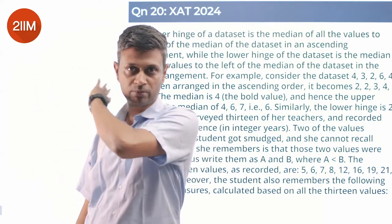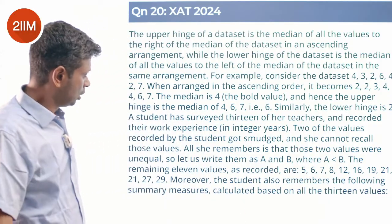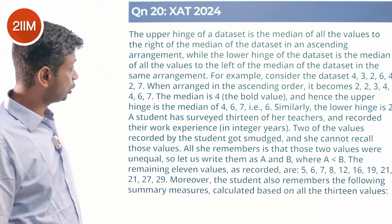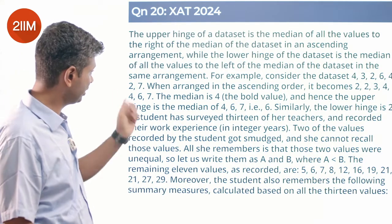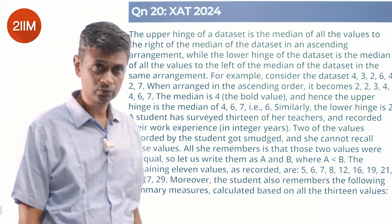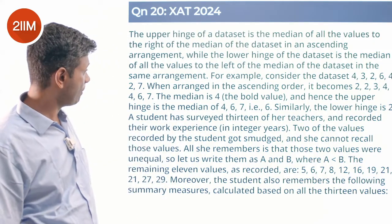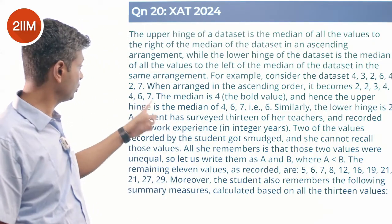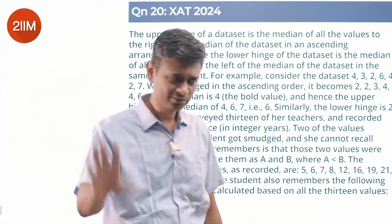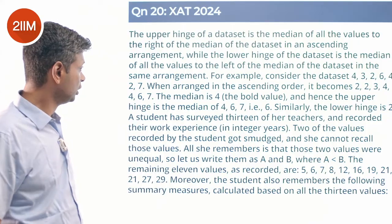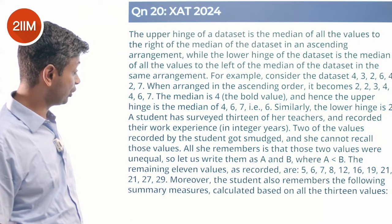For example, consider the dataset 4, 3, 2, 6, 4, 2, 7. When arranged in ascending order it becomes 2, 2, 3, 4, 4, 6, 7. So 7 things, the median is 4. The upper hinge is the median of 4, 6, 7, which is 6. The lower hinge is the median of 2, 2, 3, which is 2. Nice definitions. A student has surveyed 13 of her teachers and recorded their work experience in integer years.